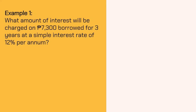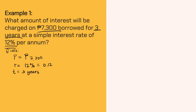Example number 1: What amount of interest will be charged on P7,300 borrowed for 3 years at a simple interest rate of 12% per annum? To answer this problem, we have to identify the given. We have the principal amount P is equal to P7,300. The rate R is equal to 12%, and converting it into decimal gives 0.12. The time is 3 years, and we have to identify the amount of interest.